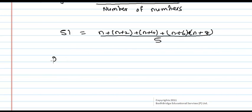Cross multiply, you get 255. This equals 5n plus 20.